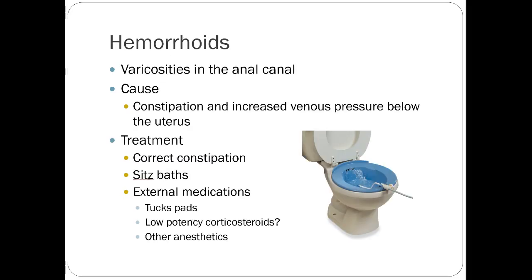Hemorrhoids are varicosities in the anal canal caused by pressure below the uterus. Treatment includes correcting constipation, sitz baths, external medications like Tucks pads, and low-potency corticosteroids like hydrocortisone, which are probably fine. Some people worry about systemic absorption, but the amount absorbed when applied externally is minimal and steroids are reasonably safe in pregnancy. Topical anesthetics like lidocaine might also be okay depending on severity.